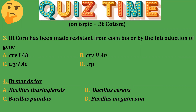Question 3: Bt corn has been made resistant to corn borer by the introduction of gene — Option A: cry1AB; Option B: cry2AB; Option C: cry1AC; Option D: TRP. The correct answer is Option A — cry1AB.